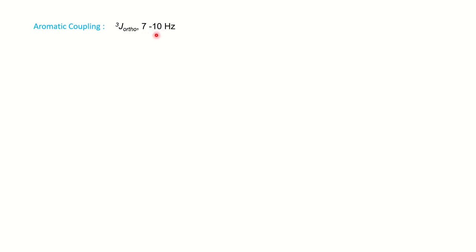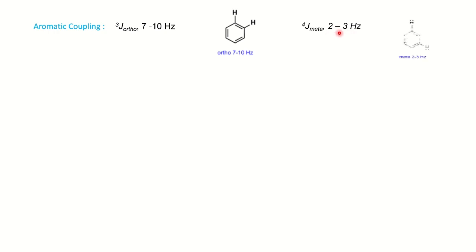Aromatic couplings: for ortho coupling, the two hydrogens are adjacent on the ring — three-bond coupling. The coupling constant is 7 to 10 Hz and it is the strongest coupling in aromatic systems. For meta coupling, it is four bonds, and because the distance increases the coupling constant value decreases to 2 to 3 Hz. You can notice it forms a W pattern — four bonds involved. Two to three hertz for meta coupling, where the two protons are meta to each other.